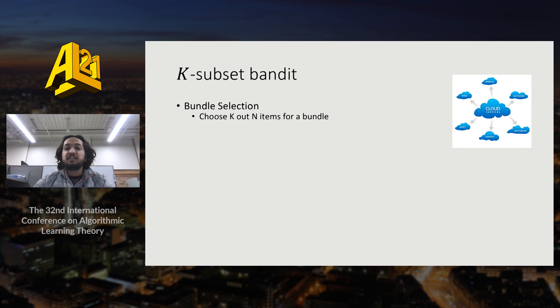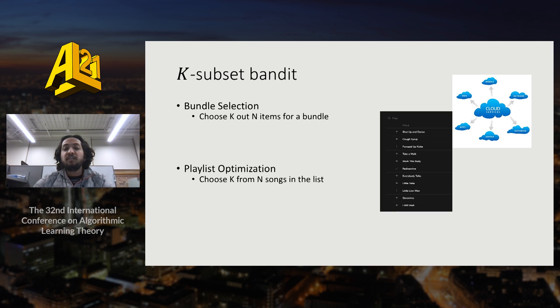We see K-Subset Setups with Non-Linear Bandit Feedback in many places. For example, a bundle pricing problem where a business may choose to include K products in a bundle. For bundle pricing, the reward is often modeled as a quadratic function of individual rewards. Another example is playlist optimization where a streaming service may choose to create a playlist of K songs from N songs. The feedback is often a single variable of whether the user likes the playlist or not.